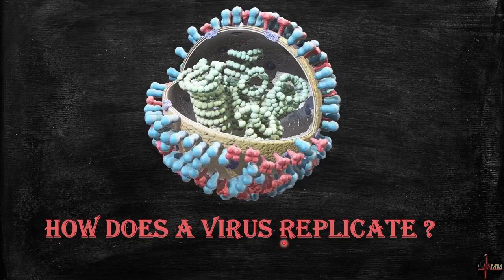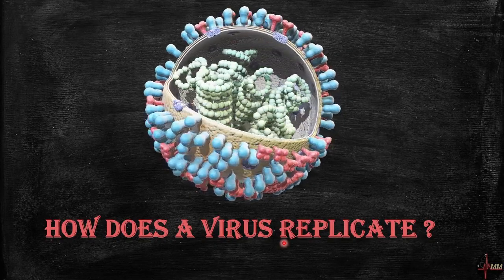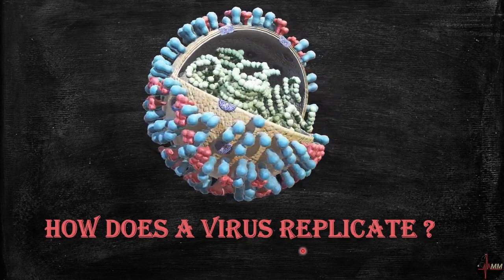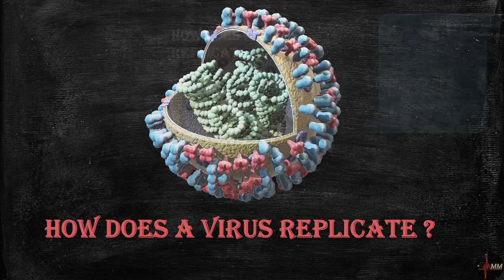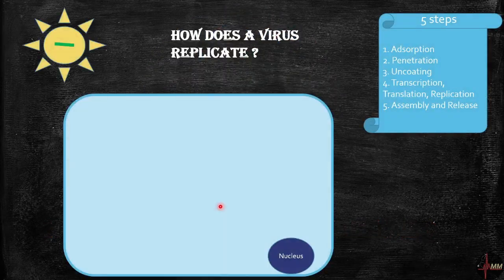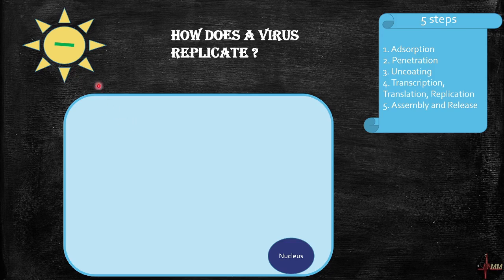Welcome to this 2-minute med video from Med Madness. So how does a virus replicate? A virus cannot survive on its own — it always depends on a host cell for its survival and replication, because it doesn't have any cellular components like ribosomes. Here in this example, I have taken a coronavirus and a human cell to see how this virus replicates using the human cell.